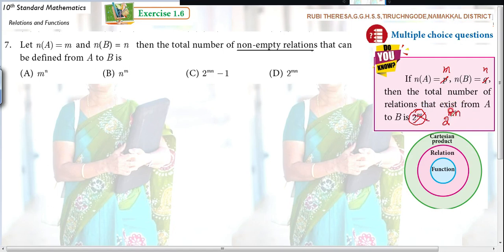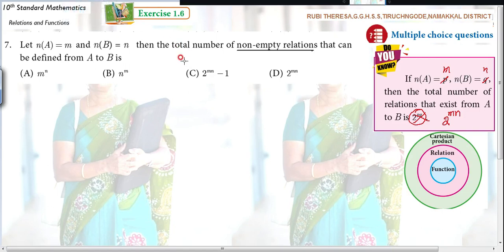That means including the empty set, the total is 2 to the power of MN. Without the empty set — that is, for non-empty relations — the answer is 2 to the power of MN minus 1.